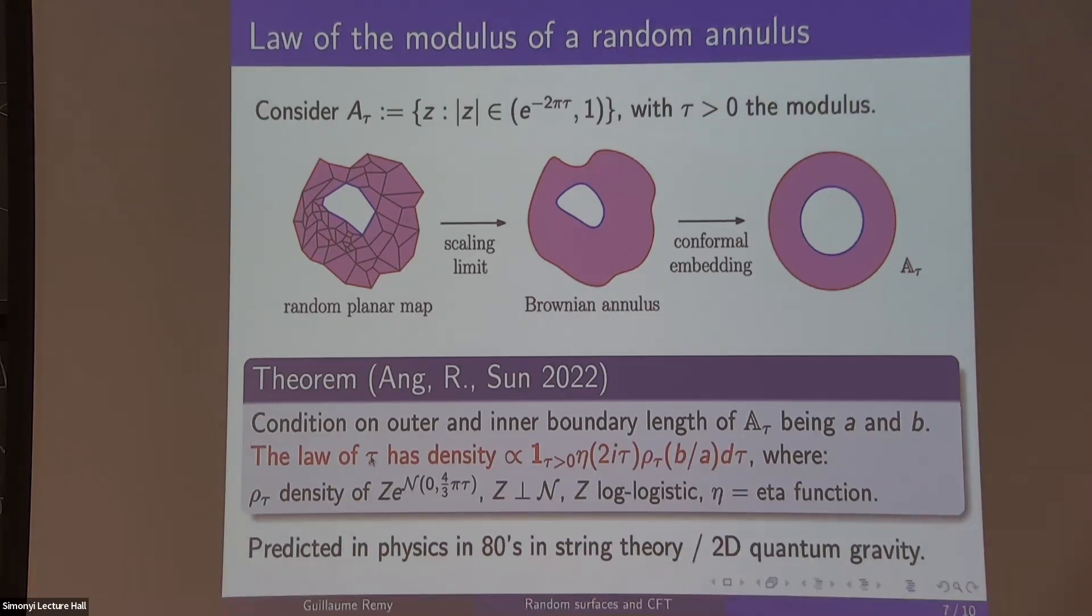So here there's a formula. For fixed inner and outer boundary lengths A and B, you get the log of this moduli, which was predicted in works in physics in the 80s on 2D quantum gravity that followed Polyakov's original paper. The determinant of the Laplacian appears in the proof.